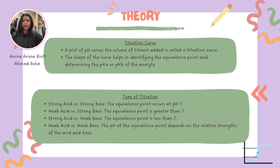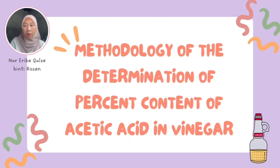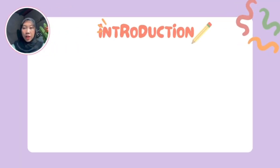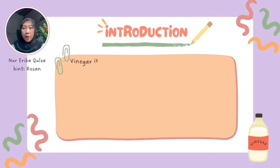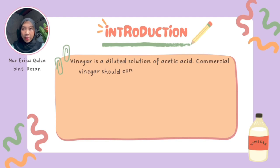Understanding the type of titration and the corresponding equivalence point is crucial for accurate analysis. Each type of titration offers unique insights into the properties of the acids and bases involved. Now we will explain the methodology for the determination of percent content of acetic acid in vinegar. Vinegar is a dilute solution of acetic acid.